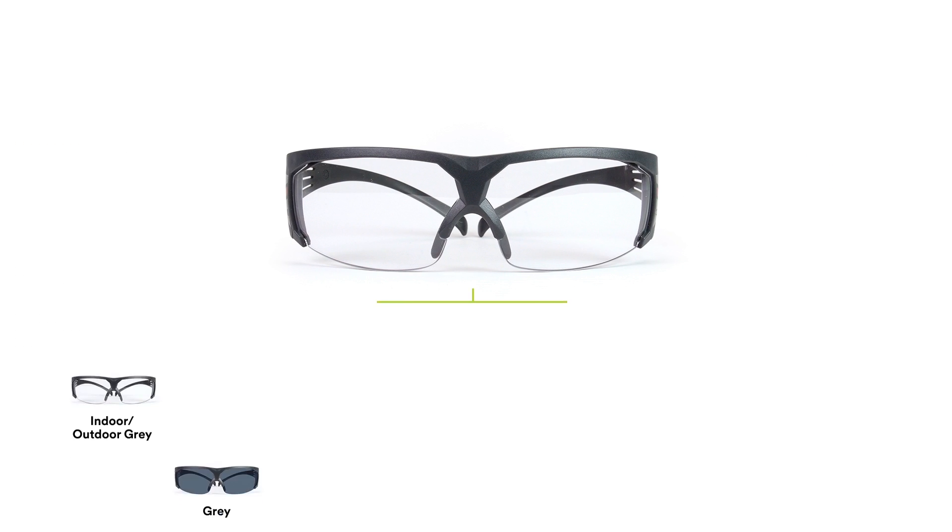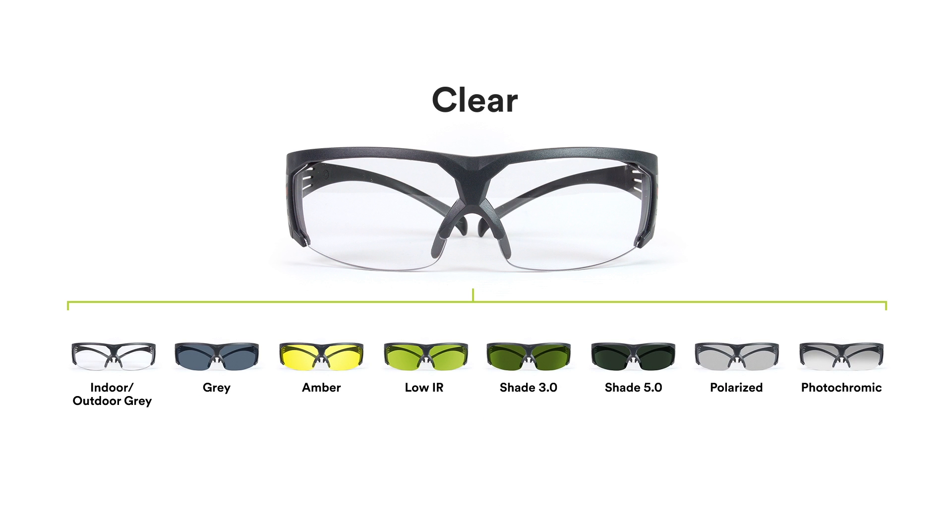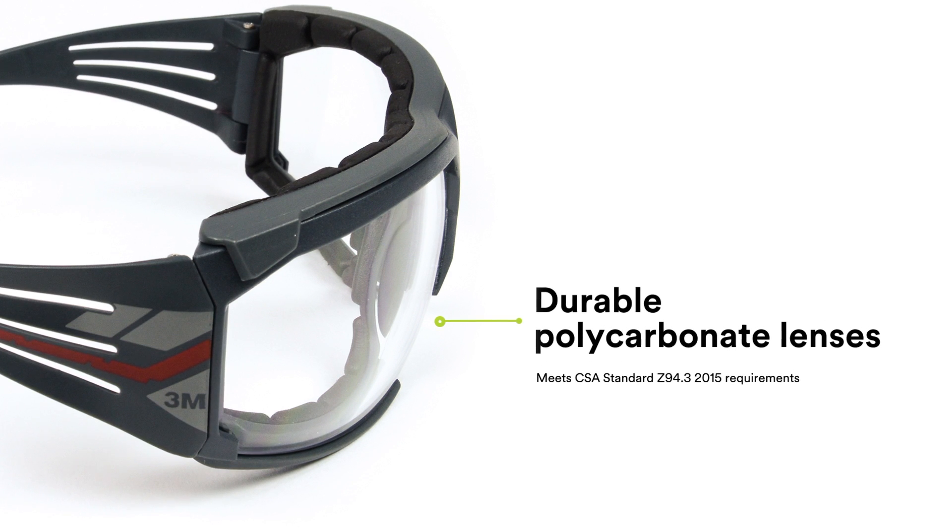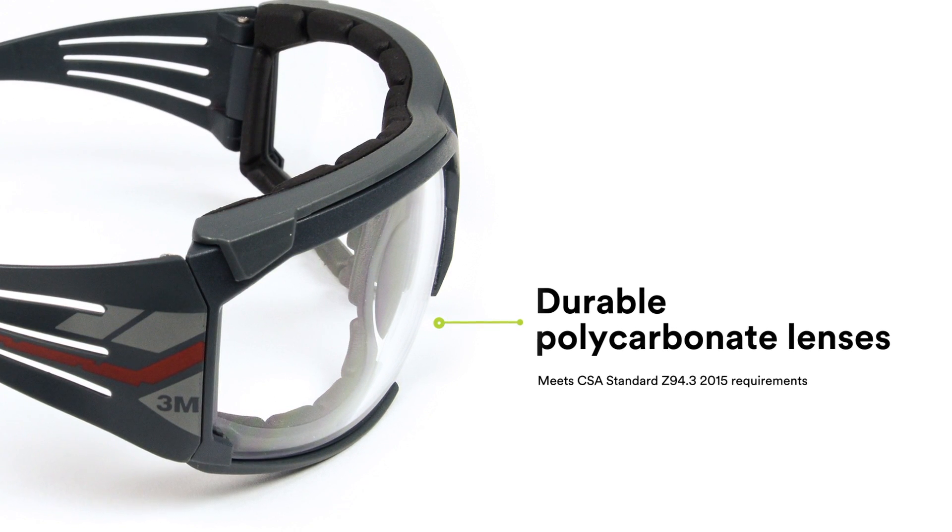With lenses in eight colors and shades, you've got clear coverage. The durable polycarbonate lenses absorb 99.9% of UVA and UVB rays.